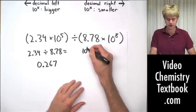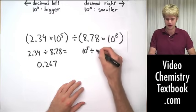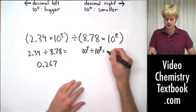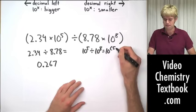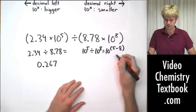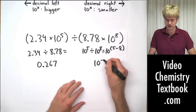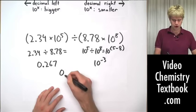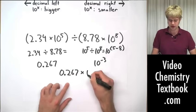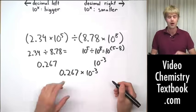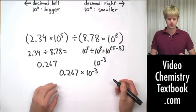So 10 to the fifth now divided by 10 to the eighth is going to equal 10 to the, because it's division, 5 minus 8, which is going to give us 10 to the negative third. So we can originally, preliminarily write this as 0.267 times 10 to the negative third, but now I want to get it into correct scientific notation.